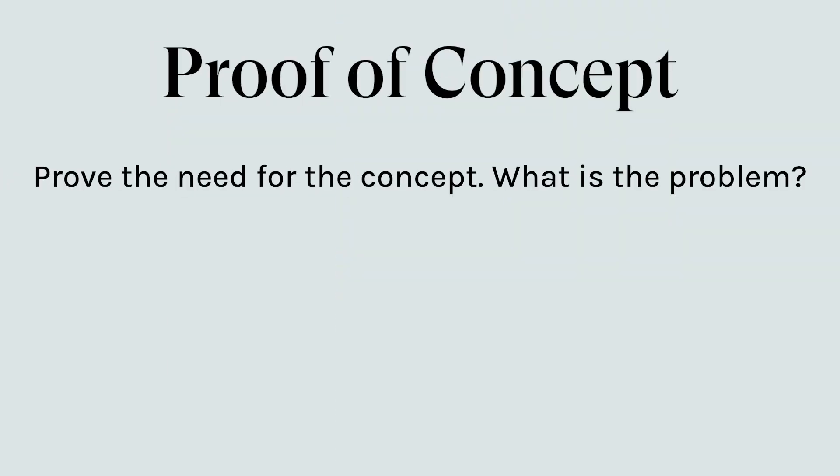So how do you get started in actually creating your proof of concept? First, you'll have to prove the need for your concept. Define your target audience — whose problem are you trying to solve? Once you know whose problem you're solving, start to ask them what their pain points are. Get as crystal clear on this as you can. Interview enough people within your target audience that you start to hear the same pain points being repeated.